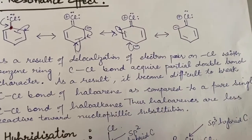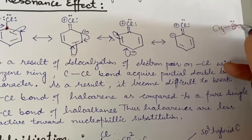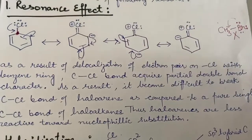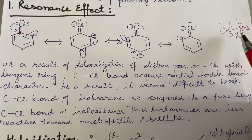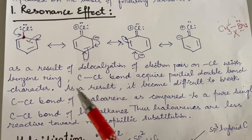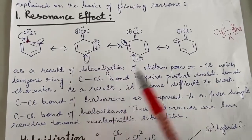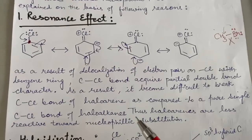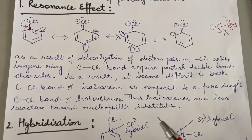Compared to alkyl halide — for example CH₃-Br — there is a lone pair but no delocalization is possible. In case of alkyl halide, the carbon-halogen bond is a pure single bond, but in case of chlorobenzene, the carbon-halogen bond acquires a double bond character. So the C-Cl bond of haloarene is more difficult to break as compared to the pure single bond of alkyl halide. Therefore it does not break quickly, so substitution will also be slow. Alkyl halides are less reactive towards nucleophilic substitution.